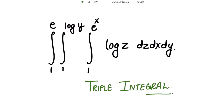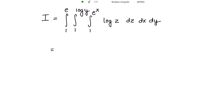We have a triple integral with integrand log(z). We need to first integrate with respect to z, then with respect to x, and finally with respect to y. Let's start with the solution by calculating the innermost integral first.